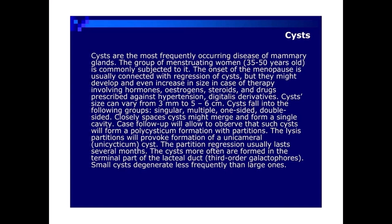Cyst size can vary from 3 mm to 5–6 cm. Cysts fall into the following groups: singular, multiple, one-sided, and double-sided cysts.